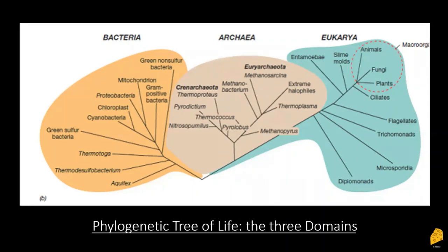Fungi are definitely closer in appearance and behavior to animals than they are to plants in a lot of ways. One of the main ways to differentiate is that animals will digest their food on the inside and fungi digest their food on the outside. While we use stomach acids to break down nutrients, fungi release various compounds to break down their food and then absorb it once it's already digested.